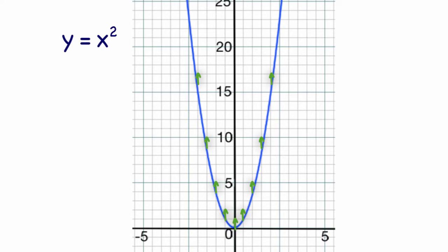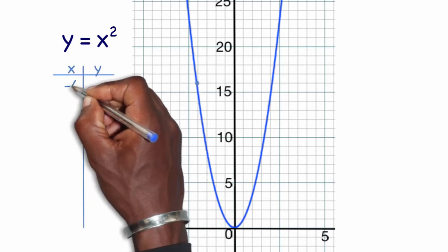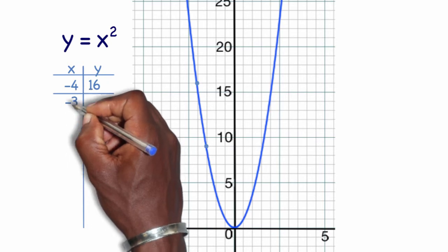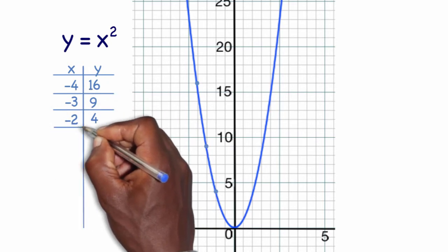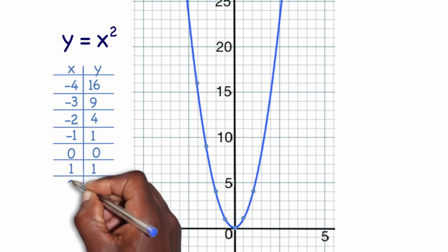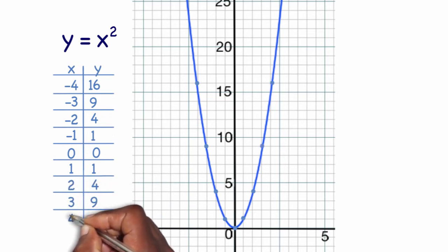My original coordinates for the parent graph were: negative 4, 16; negative 3, 9; negative 2, 4; negative 1, 1; 0, 0; 1, 1; 2, 4; 3, 9; and 4, 16. Now if I shift the entire graph up...